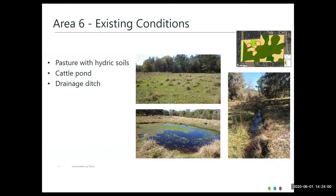Now I'm going to jump to Area 6, which is a little different — instead of stream restoration, this was a wetland restoration area. This was pasture where we found hydric soils, and there was a cattle pond and a drainage ditch.